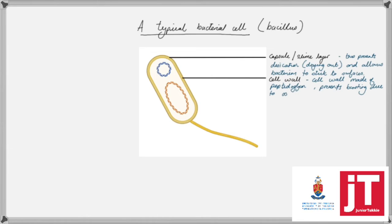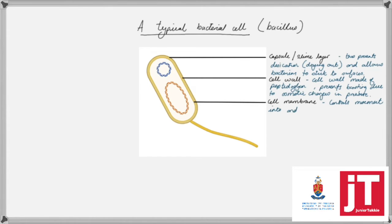We have the cell wall just under the slime layer, made of peptidoglycan. This prevents the bursting of the bacterial cell from the osmotic pressures that could be changing in the internal environment, so that internal pressure pushing out is resisted by the cell wall. We then look at the cell membrane, with its typical function of controlling what moves into and out of the cell. Inside the bacterial structure we have cytoplasm, and here we'll find ribosomes for protein synthesis.